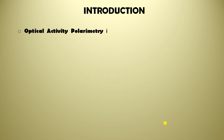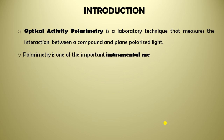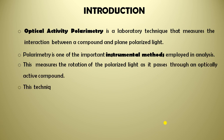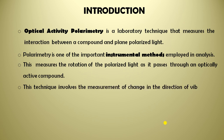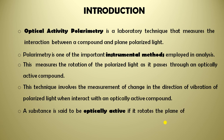Optical activity. Polarimetry is a laboratory technique that measures the interaction between a compound and plane polarized light. It is one of the important instrumental methods employed in analysis, measuring the rotation of polarized light as it passes through an optically active compound. This technique involves measurement of the change in direction of vibration of polarized light when it interacts with an optically active compound.